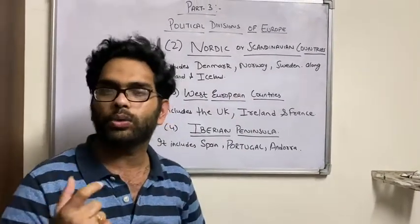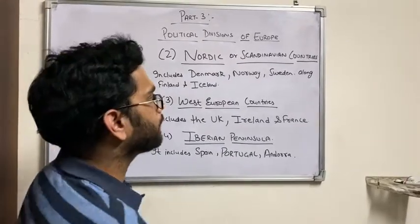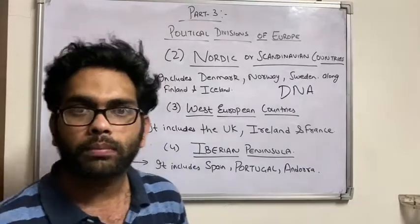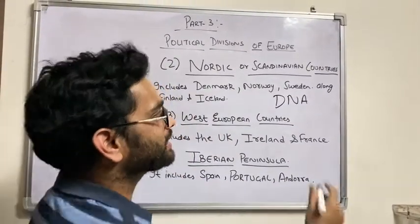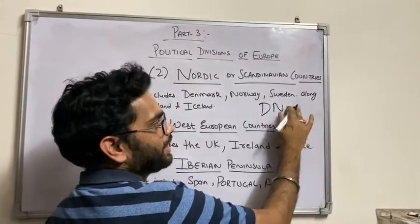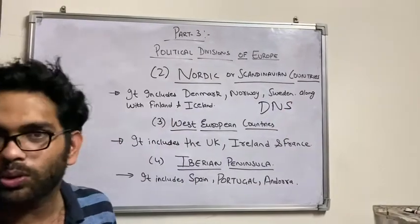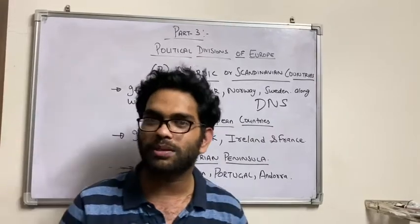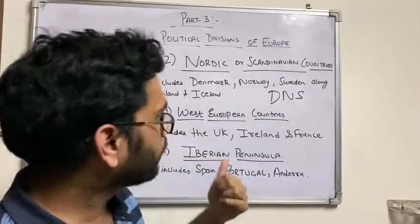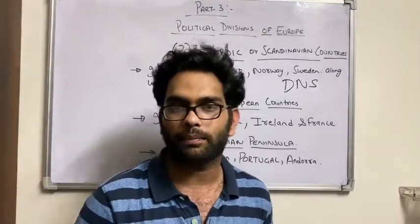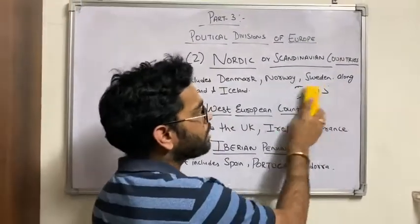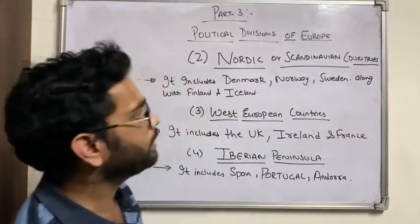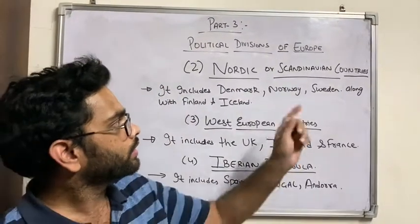I have formulated a way to remember these. You will have studied DNA. Now, my channel name is Sandeep Agarwal, so you can replace the A with S. So D is for Denmark, N is for Norway, and S is for Sweden. This is very simple — by DNS you can easily learn the countries of the Nordic region.